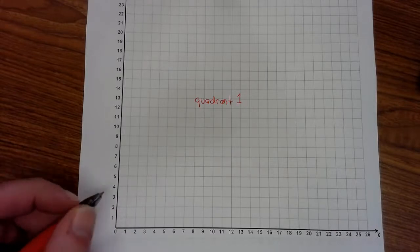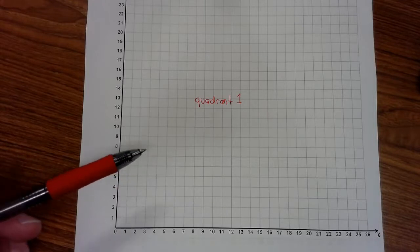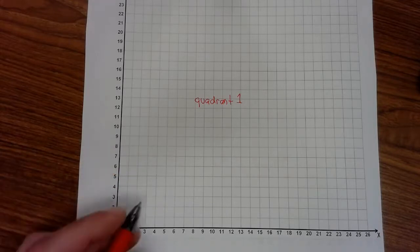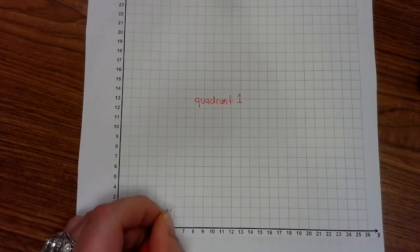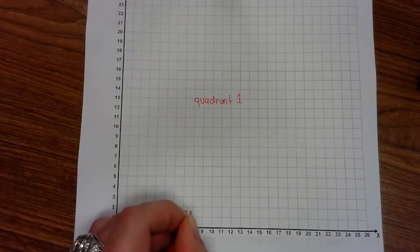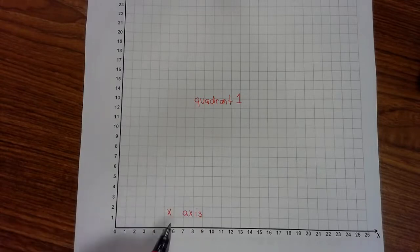No matter what quadrant we're working in, fifth grade you will work mainly in quadrant one. You have the x-axis. This is the line that runs horizontal.